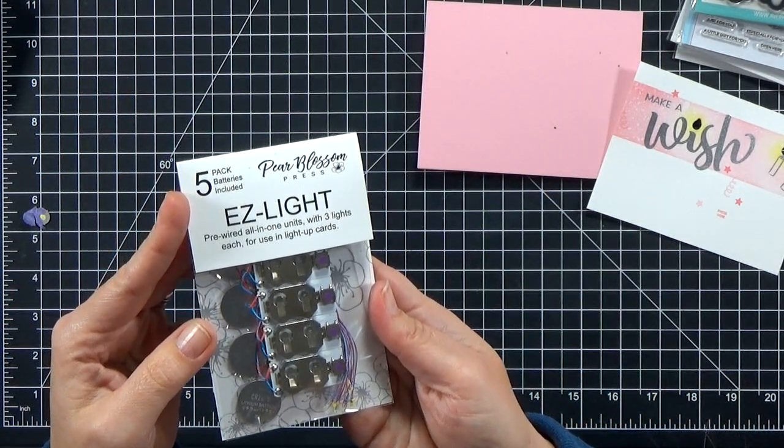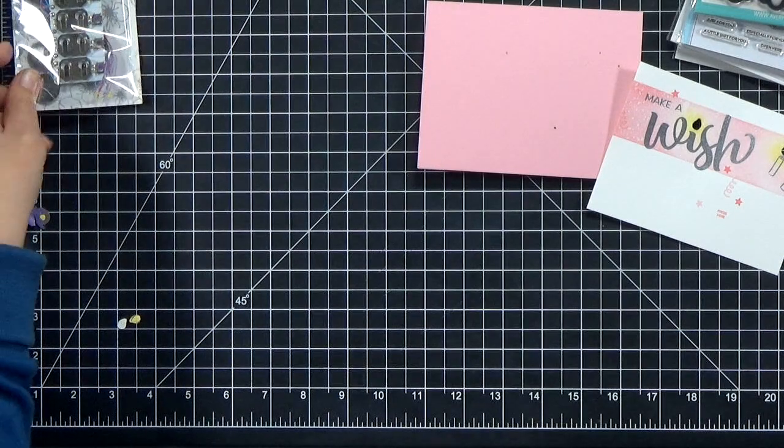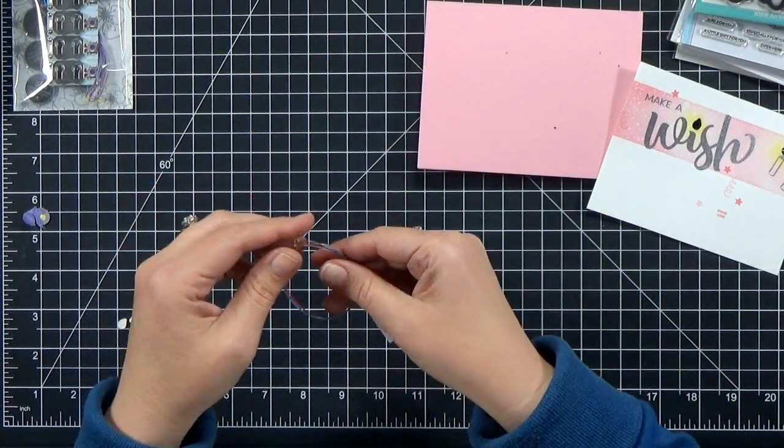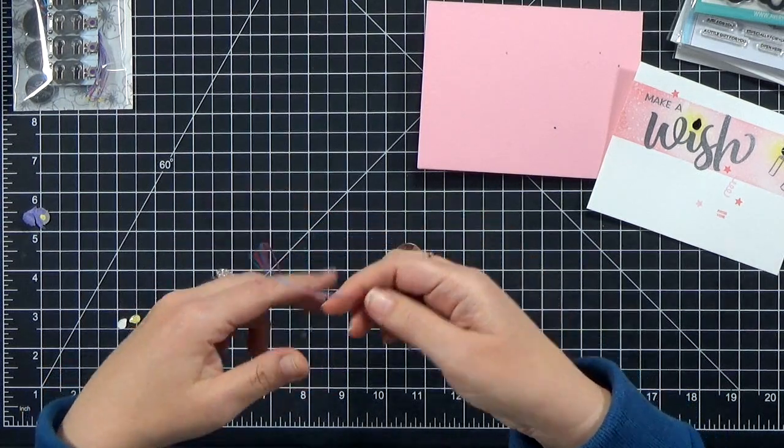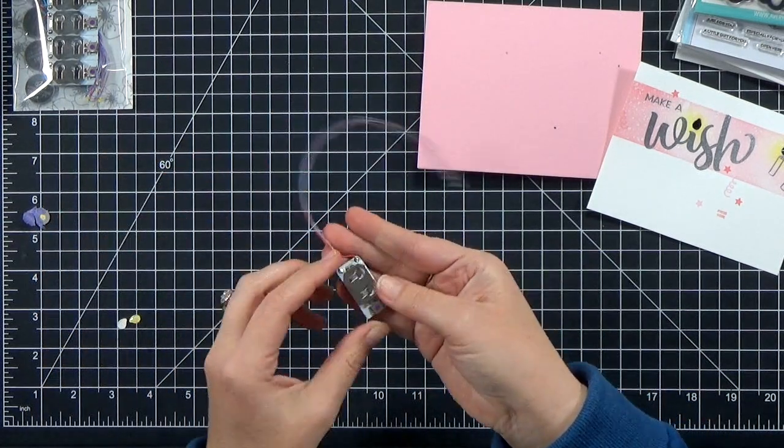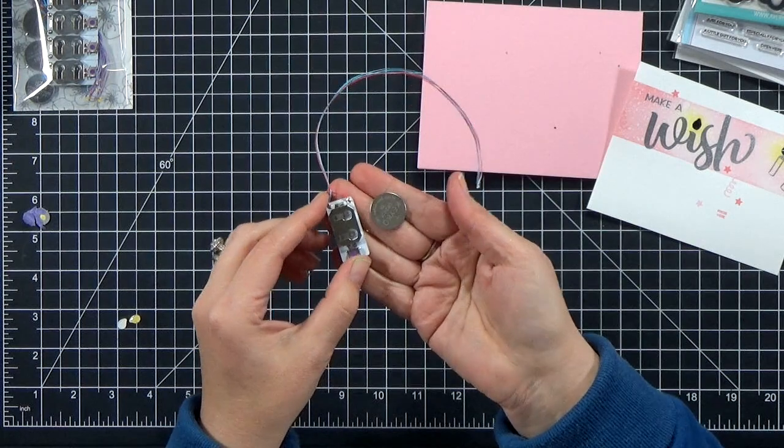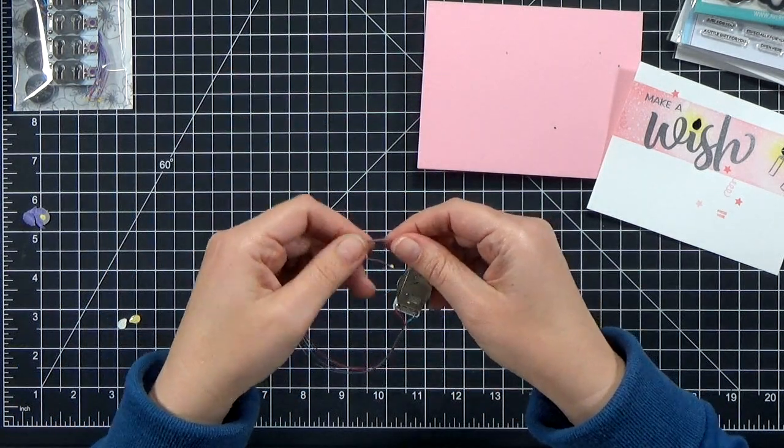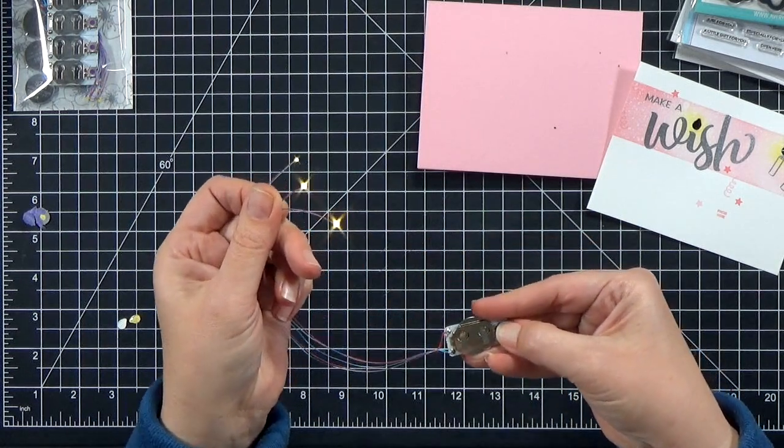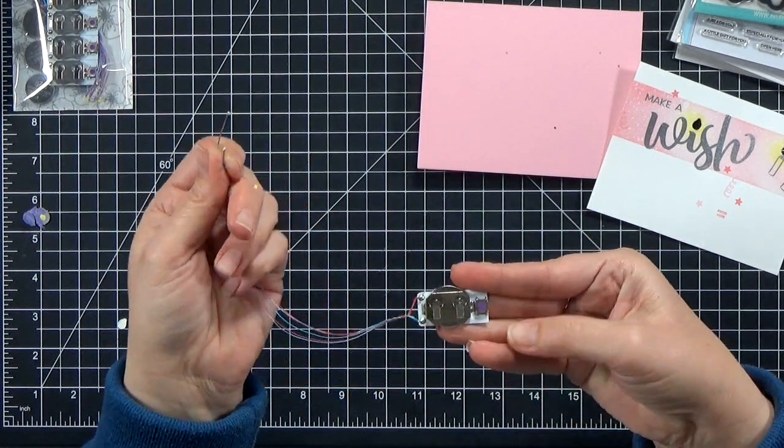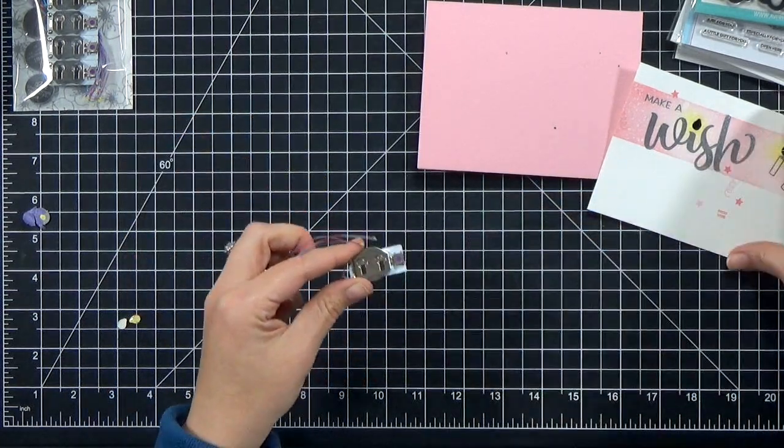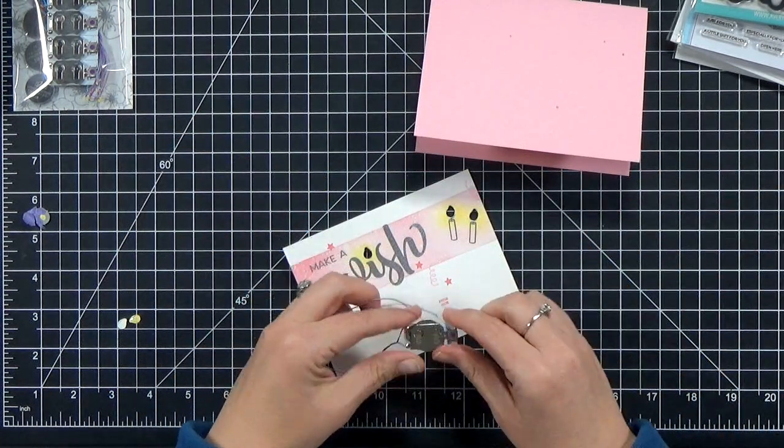So if you haven't seen these before, these are Easy Lights. These are actually a product my husband and I designed. They come in different quantity packages. That was a pack of five. Just snap them apart. And then when you pull it out, it also has the batteries. You put in the battery and then you push the button and they light up just like a flashlight. Easy peasy. That little purple dot is the button, and each one has three different lights already at the end of each wire. So it's very simple.